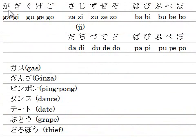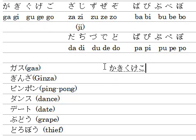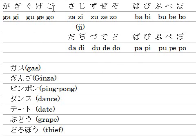First of all, you remember カキクケコ, right? It's the K-row (ケイロー). It starts with K: カ、キ、ク、ケ、コ. The 濁音 in the K-row is G — just replace K with G. ガギグゲゴ.